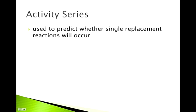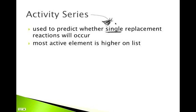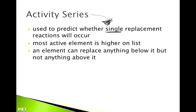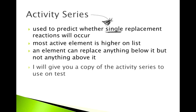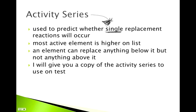The purpose of this is to predict whether or not a single replacement reaction will occur. Activity series are only used for single replacements - you don't use these on double replacements, synthesis, or decomps. The most active element is the one that's higher on your activity series. Basically, the rule is an element can replace anything below it, but not anything above it. If you want to use the borderline inappropriate relationship analogy, if someone is going to dump who they are with to get with someone else, they're going to move up, not down. I will give you a copy of the activity series to use on the test, so you don't have to memorize that.